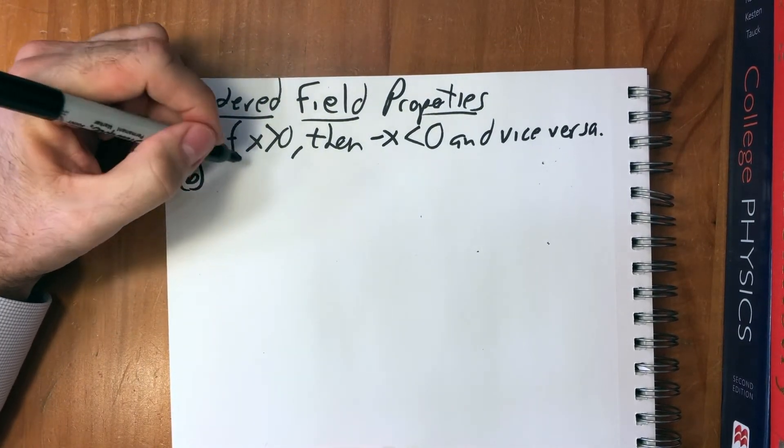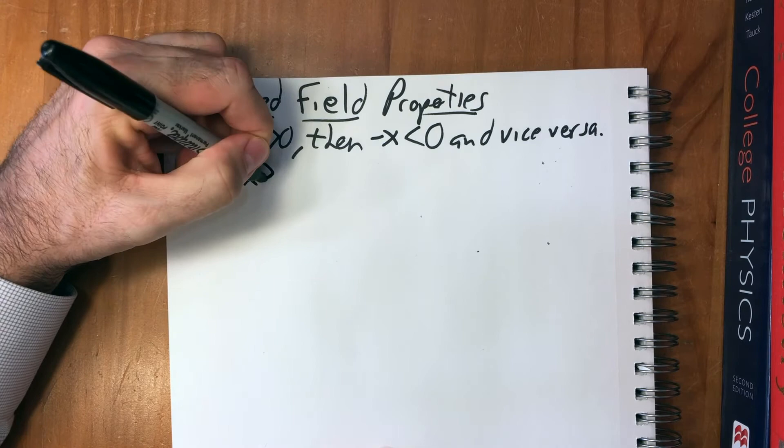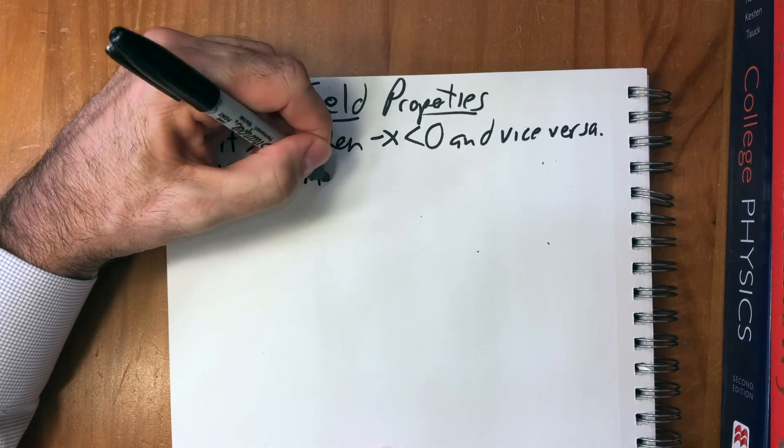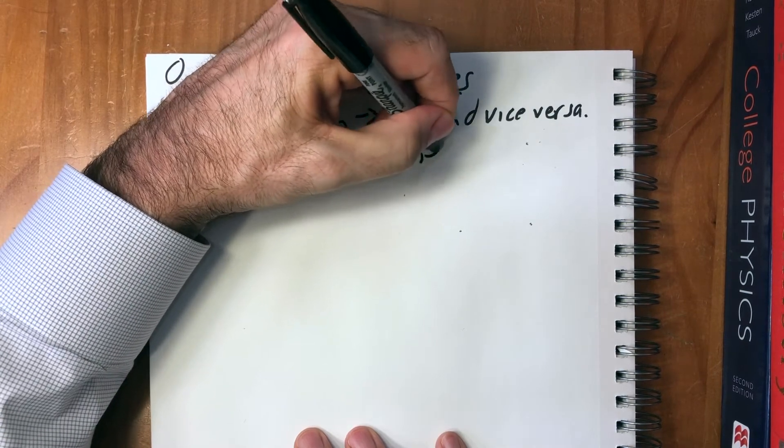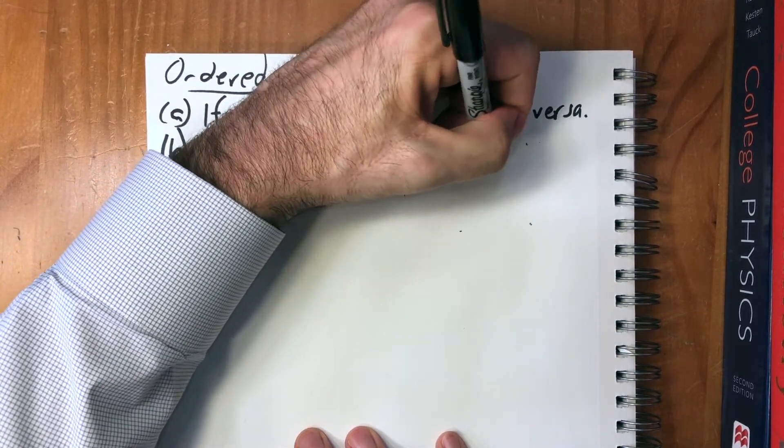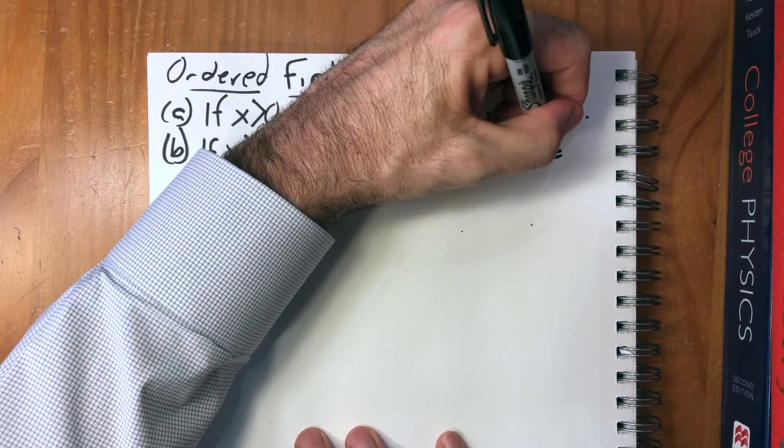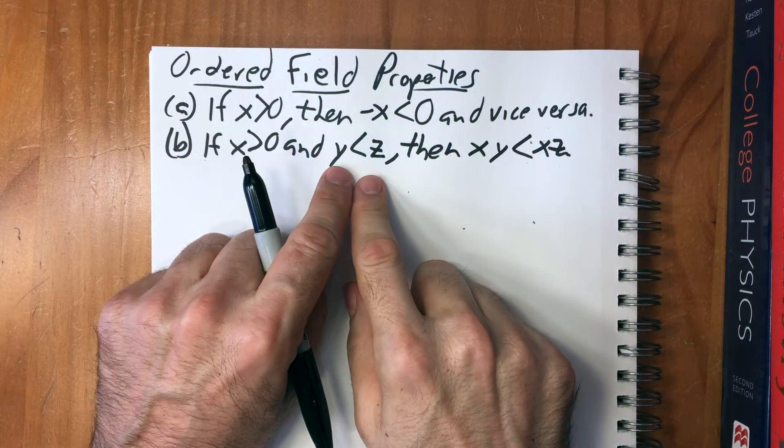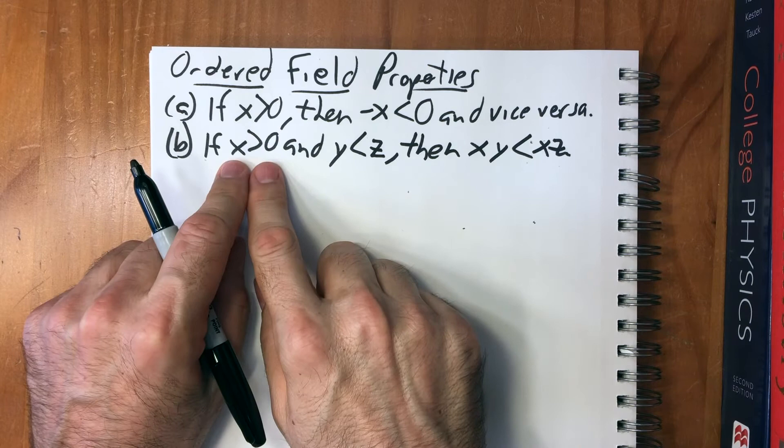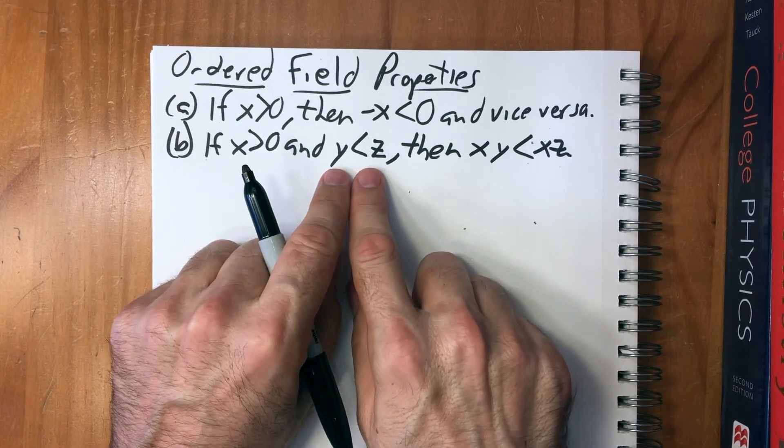B, if x is greater than zero and y is less than z then xy is less than xz. This just says again that if x is positive then if you multiply both sides of an inequality by a positive number it maintains the inequality.